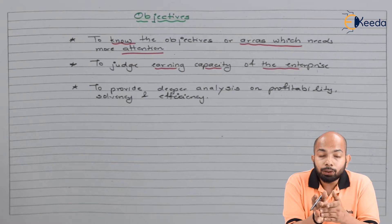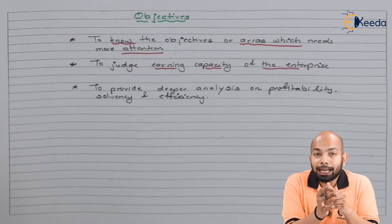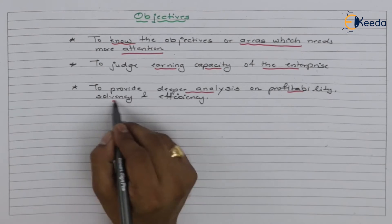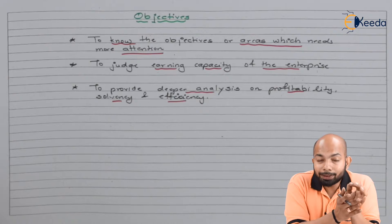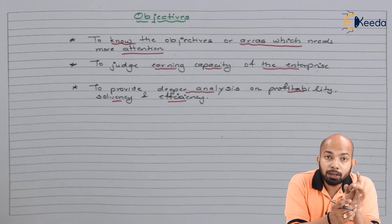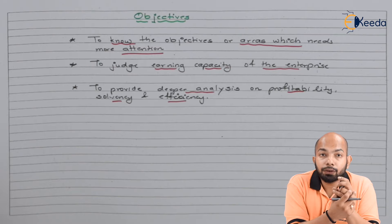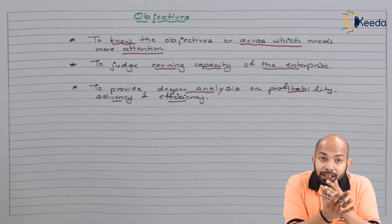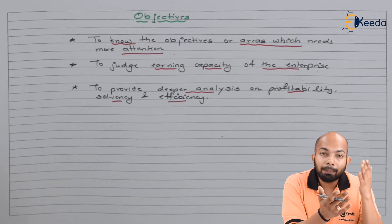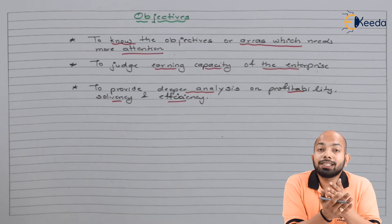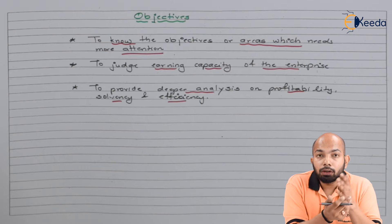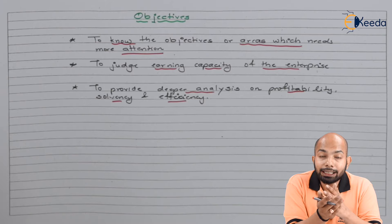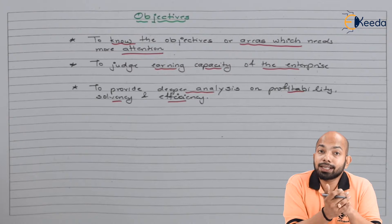It also helps you in giving a deeper analysis on profitability, solvency, and efficiency. How much profit can we earn? How solvent are we? That means how far away are we from being bankrupt? What ratio regarding profitability, solvency, and efficiency level we can attain is what ratio analysis helps you with.